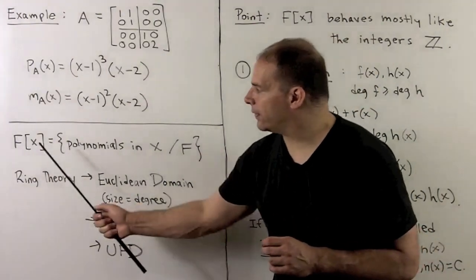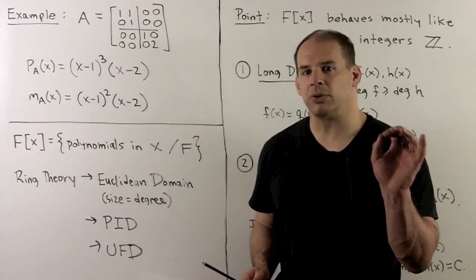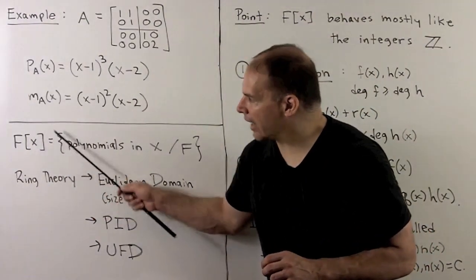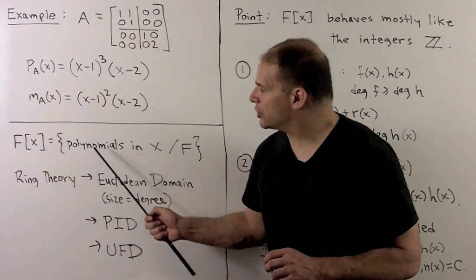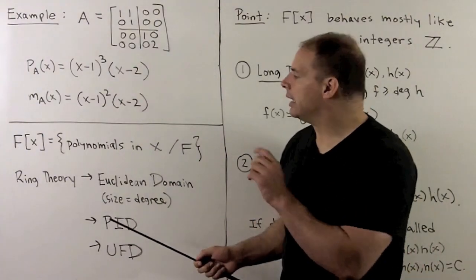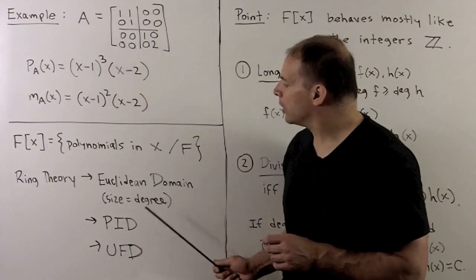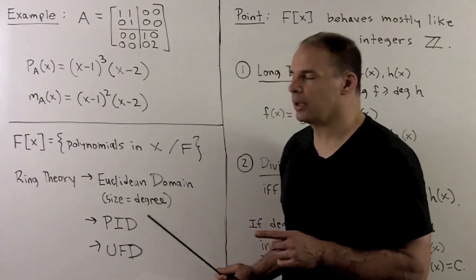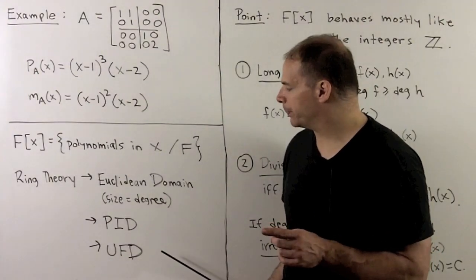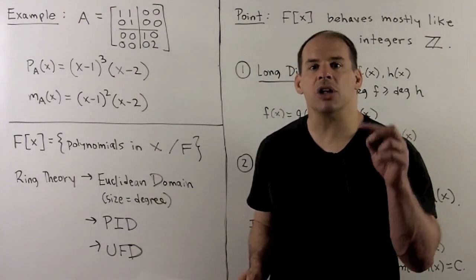Now, to show the theorem, we need to understand how polynomials work. So we'll give a brief review of this. For notation, I'm going to have F adjoin X in brackets. This is just a set of polynomials in X with coefficients in the field F. If we have ring theory available, then we have that F[X] is a Euclidean domain, where size is measured by degree of polynomials. That implies we have a principal ideal domain, which implies we have a unique factorization domain.